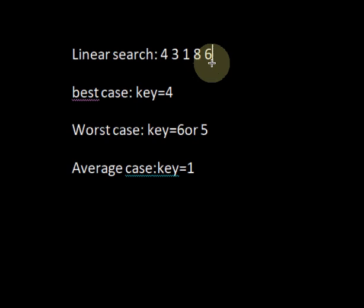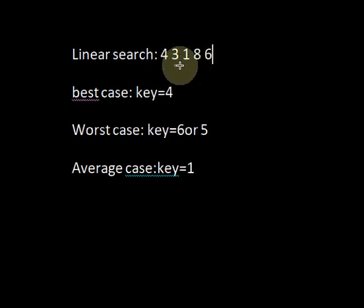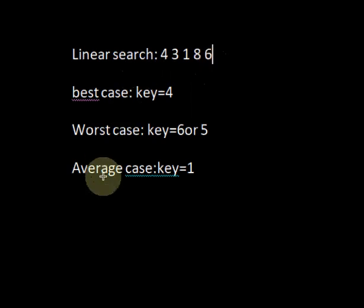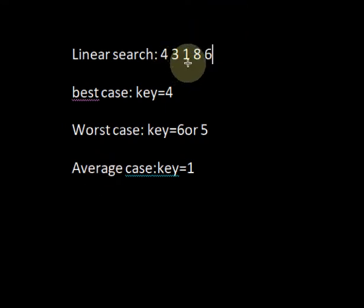In both worst case situations, we have to go through the entire iteration of the loop and compare each and every element — that is the worst performance of linear search. The average case occurs when the element being searched is present somewhere in the middle, requiring comparison of only about half the elements. In the next video, we will see each case in detail and how to calculate the asymptotic time complexity of the algorithm in the best case, worst case, and average case, along with the corresponding asymptotic notations.